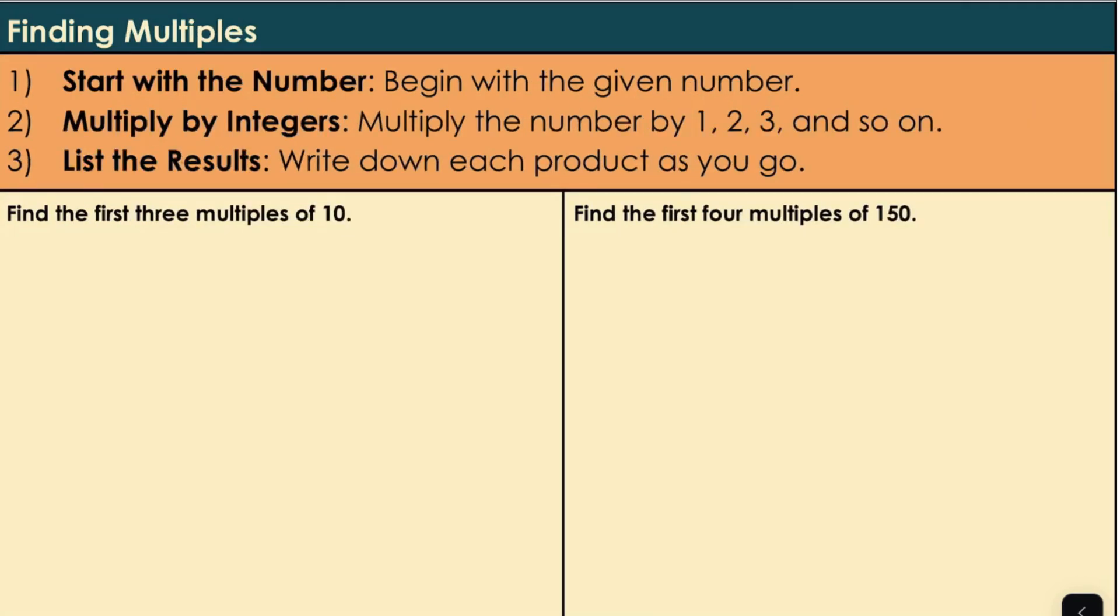Finding multiples. So again, we have a three-step process. We start with the number. We multiply by integers. Then we list the results. So we see the question requests the first three multiples of 10. So what is 10 multiplied by 1? 10. 10 multiplied by 2. Multiplied by 3. And we are done.